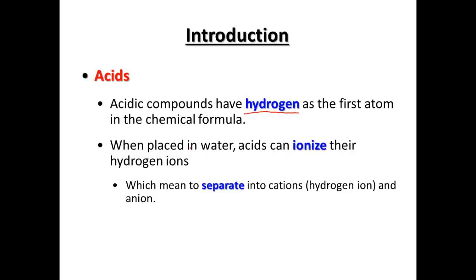When placed in water, acids can ionize, meaning they make positive and negative ions. They're going to separate into their cation — the hydrogen positive part — and an anion, a negative part. An example of this: HCl is one of our stomach acids.